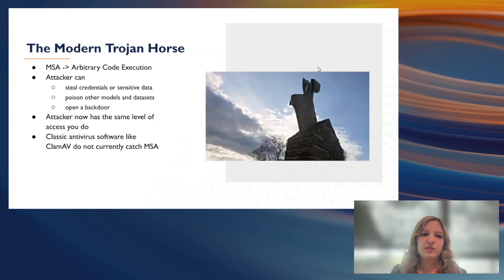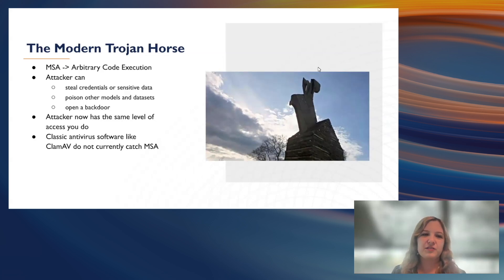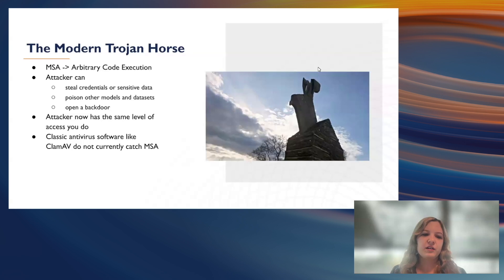The attacker can do any number of things: stealing credentials or sensitive data, poisoning other models and data sets, or opening a back door they can use later. It's really the modern version of the Trojan horse — like the Trojan horse viruses from the early internet days where you think you're downloading a program that does one thing, but it ends up running other background processes. You might not know, just by using the machine learning model, that this has occurred. Classic antivirus software like ClamAV doesn't currently catch model serialization attacks because it's in the serialized code — if it were deserialized they might catch it, but by that point you're already vulnerable.